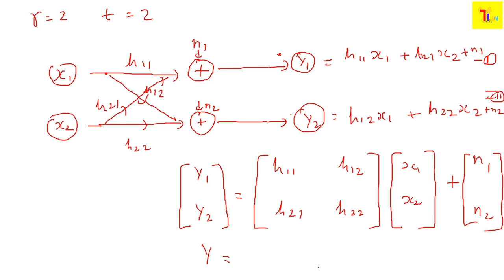We can write this compactly as y = H·x + n, where H is the channel coefficient matrix and x is the transmitted signal. Our objective at the receiver is to yield x, although we receive y. Since y is known, we need to find x by figuring out H. For that we send a reference signal that is pre-known to the receiver, so we can estimate the channel.